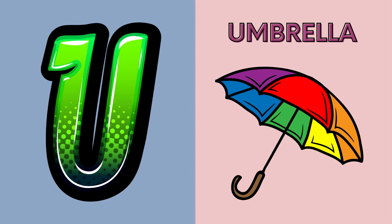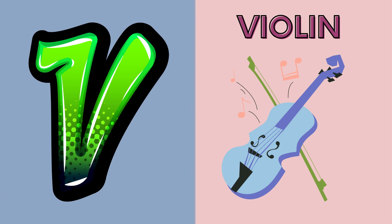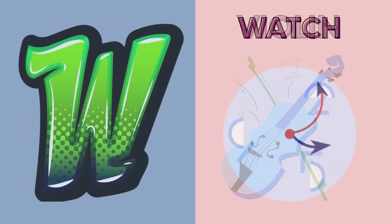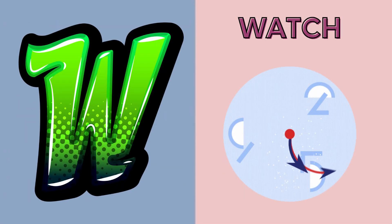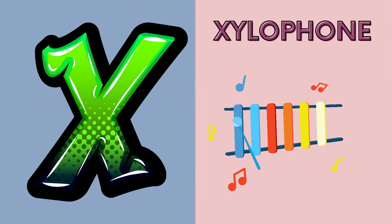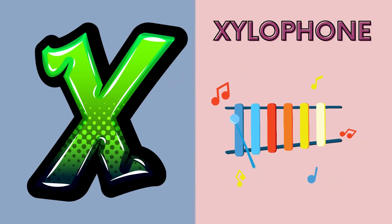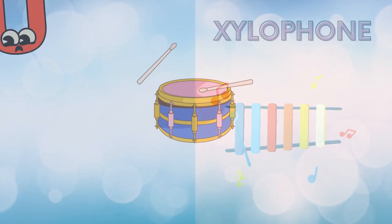U is for umbrella, u-u-u-umbrella. V is for violin, v-v-violin. W is for watch, w-w-watch. X is for xylophone, z-z-xylophone.